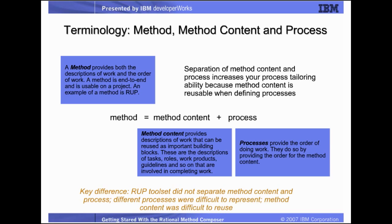A complete method is made up of content and process definitions. Method content describes the tasks, roles, work products, and guidelines that are used and involved in completing the work. Processes, on the other hand, provide the order for doing work. They take the content previously defined and order it so that we can tell the sequence in which the steps involved in the process are completed.